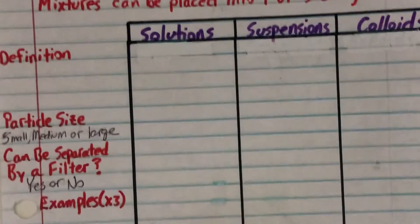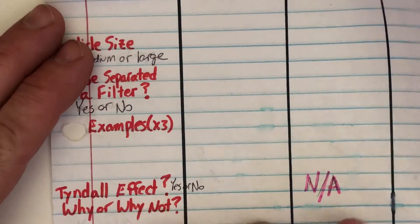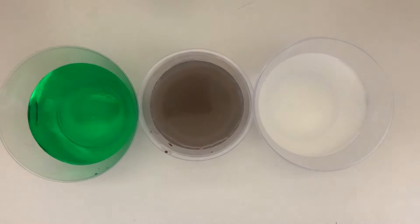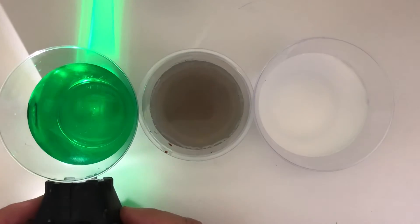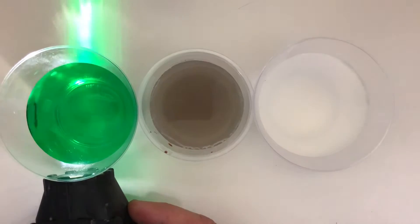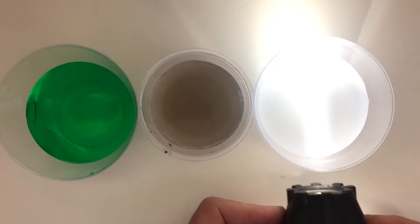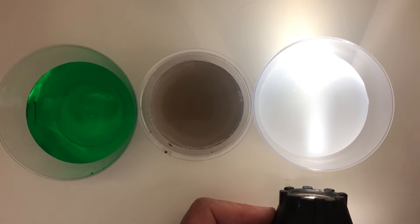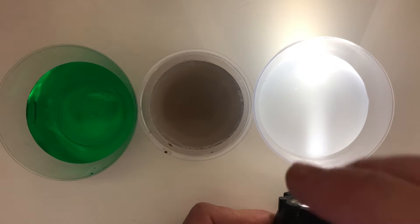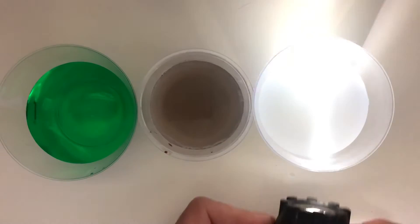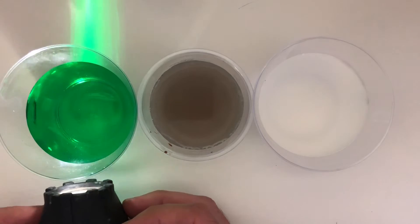The Tyndall effect is another way to test what kind of mixture you're actually dealing with. I've got a light and I'm going to shine it through the side. You can see the light coming out the other side, but we can't see the light beam in the solution — because those particles are so small they won't reflect the light. In the milk, we can actually see the light beam in the cup — that's the Tyndall effect. The milk particles are big enough to scatter the light but small enough that they won't sink. This test is really to tell the difference between solutions and colloids.